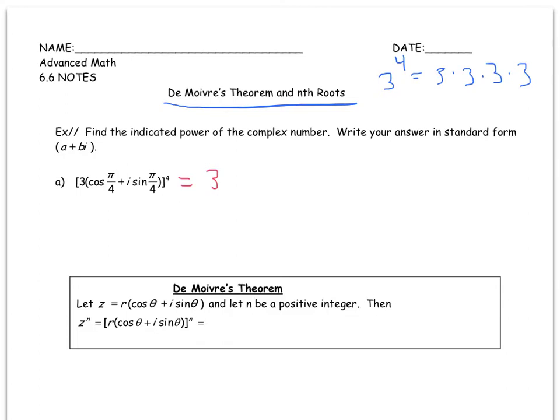So notice that the angles are the same next to the cosine and the sine. And notice that cosine always comes first and then sine and that the I is attached to the sine. You can abbreviate this expression as 3 CIS pi over 4.